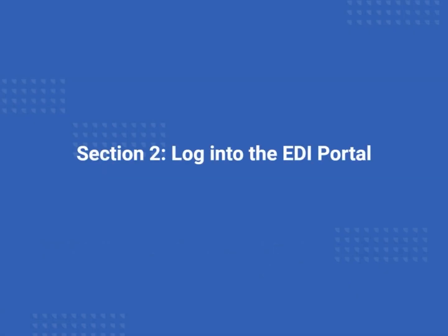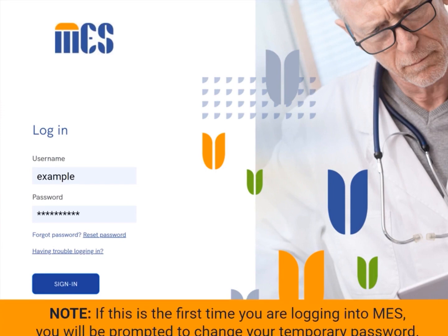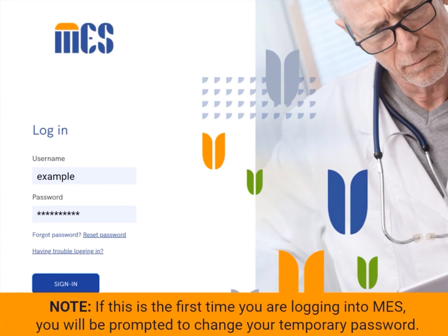After your enrollment is approved, you will receive two emails. One email will contain a temporary password. The other email will contain your username and a link to MEZ. To access the EDI portal, log into MEZ with your username and password. If this is the first time you are logging into MEZ, you will be prompted to change your temporary password.